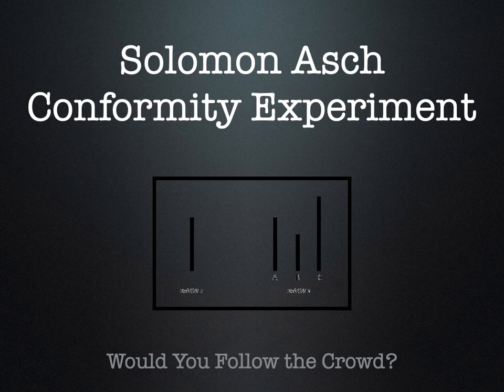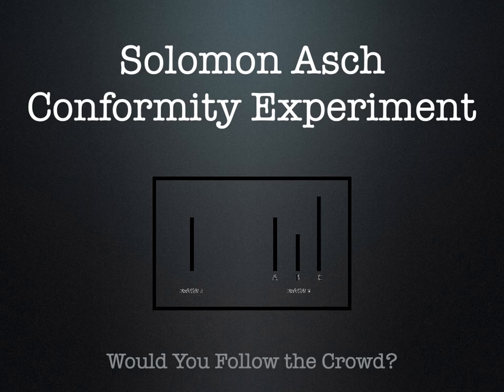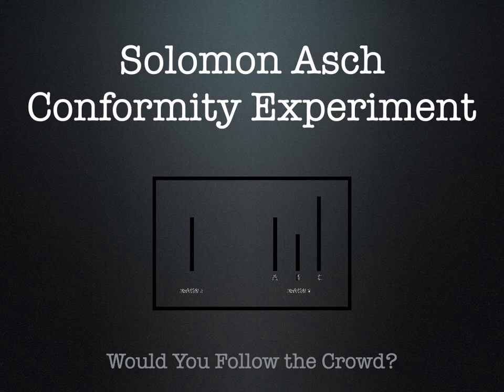The setup of this experiment: there are five or six people in the experimental room, but only one of them is really a subject of the experiment. The other four or five are in on the experiment. They're going to look at cards — they'll be asked which line on the right part of the card matches up with the line on the left. The people who are in on the experiment are going to be told to pick the wrong line. The idea is to see how many people will conform at least once to picking the wrong answer because everybody else is.